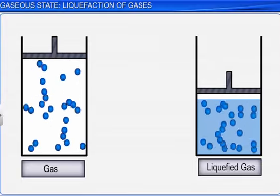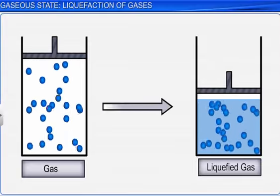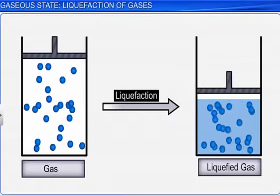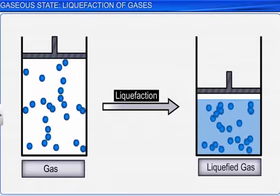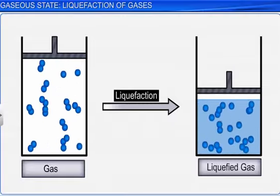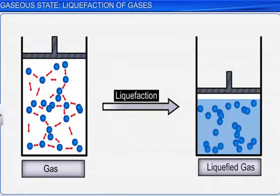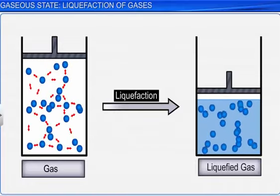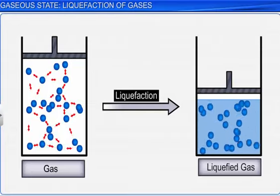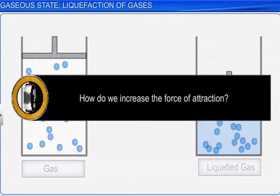A gas can be converted into a liquid through a process called liquefaction. Liquefaction of a gas can occur only when the intermolecular force of attraction between the gas molecules are increased. So, how do we increase the force of attraction?